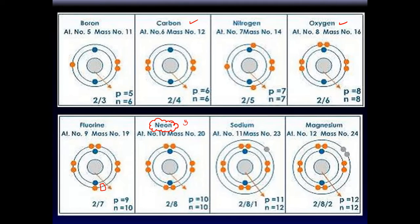Neon is interesting — its first orbital has two electrons and its second orbital is full with eight electrons. So neon is a happy gas, a noble gas. Noble gases don't react because their orbitals are full. An atom with completely full orbitals in its natural state will not react — like helium balloons, which are inert. Argon is another noble gas whose orbitals are also full.